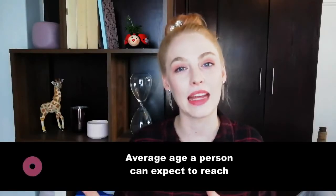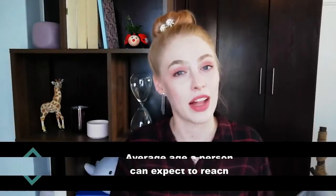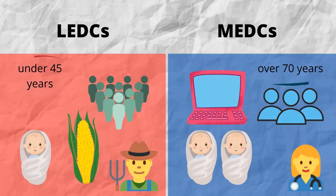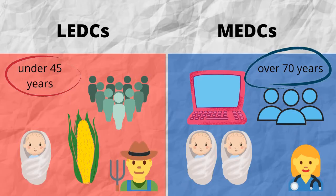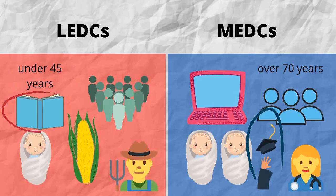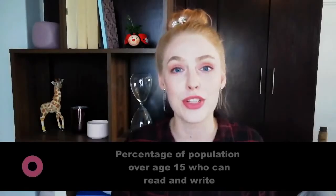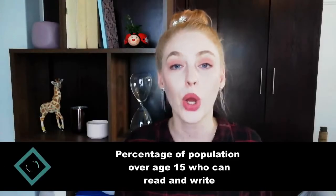Life expectancy refers to the age a person can expect to reach. This is an average age calculated for each country and will be different in each country, and it can be impacted by various factors such as natural disasters or differences in healthcare. Life expectancy tends to be a lot lower in LEDCs and on average is under 45 years. Whereas in MEDCs it tends to be a lot higher, with the average life expectancy usually over 70 years. In terms of education, LEDCs generally have lower literacy levels and children often do not finish the entire schooling process. Whereas in MEDCs, most people have 12 years of schooling and there tends to be very high literacy levels. Literacy rate refers to the percentage of the population, usually over the age of 15, who are able to read and write.